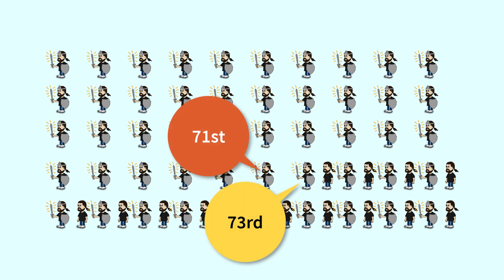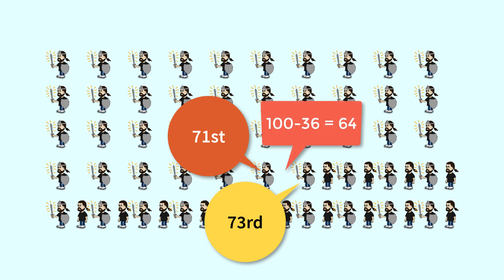In the given scenario, number one has a sword, kills number two, and gives the sword to number three. Starting from 1, we remove every alternate person. All even-numbered people will be removed up to 72 — meaning 1 kills 2, 3 kills 4, and so on until 71 kills 72. That's 36 people killed. The remaining count is 100 minus 36, which is 64. Now 64 people remain in the circle, and 64 is a power of 2 — that is, 2 to the power of 6 equals 64.